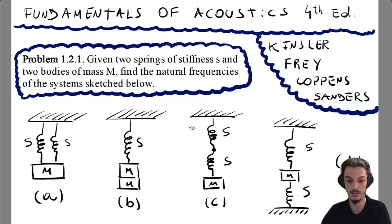Two springs in series, two masses attached to each other. In here we have two springs and the mass in the middle. So how can we find the natural frequencies of these systems? Well, we can use this simple harmonic oscillator theory.